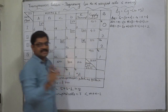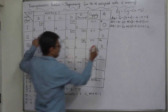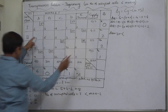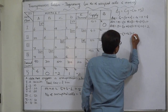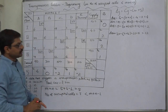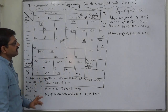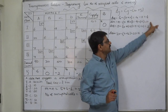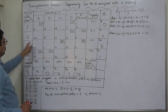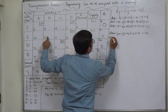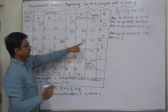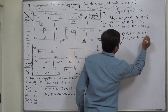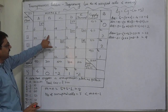Now for row 2: d(2a) = c minus ui minus vj = 20 minus 2 minus 6 = 20 minus 8 = 12, positive. A positive dij value means that if we allocate any quantity to this cell, the cost will increase by that amount. For d(2b): c is 6 minus ui 2 minus vj 0 = 6 minus 2 = 4, again positive — the cost will increase by rupees 4 per unit.